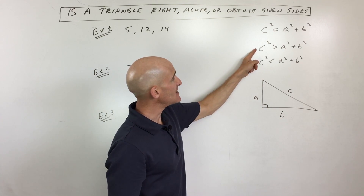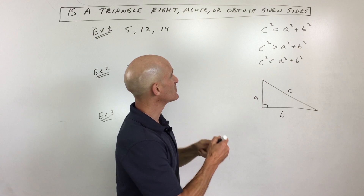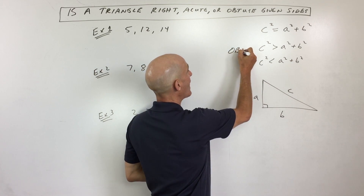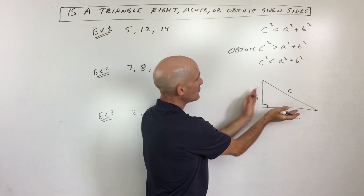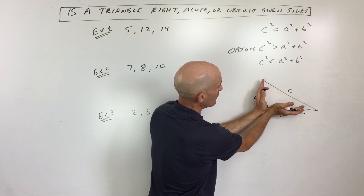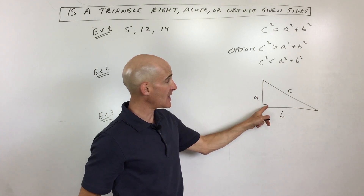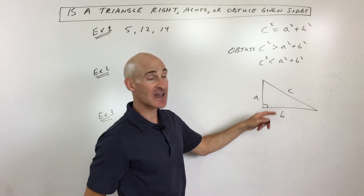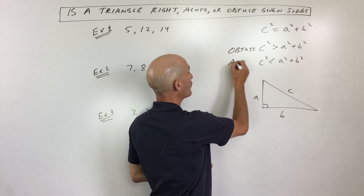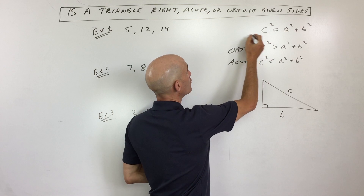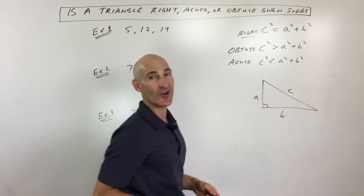So if the c side — the longest side — has c squared greater than a squared plus b squared, this is going to be obtuse. What would happen if the c side got shorter, like we pulled in those two legs? Then this angle across from that side is going to become smaller than 90 — it's going to be an acute triangle. And of course, if it's equal, then we know it's a right triangle, meaning it has a 90 degree angle.